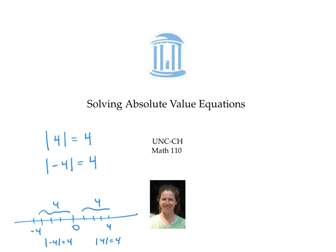Similarly, if I write the equation the absolute value of x is three, that means that x has to be three units away from zero on the number line. And so x would have to be either negative three or three.